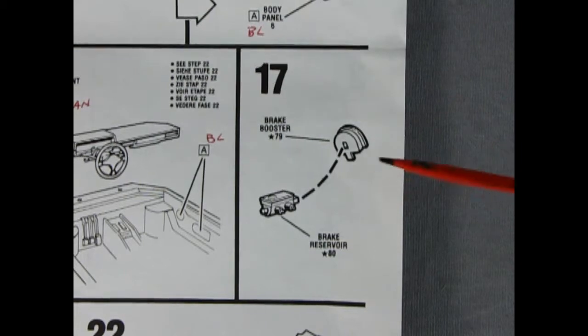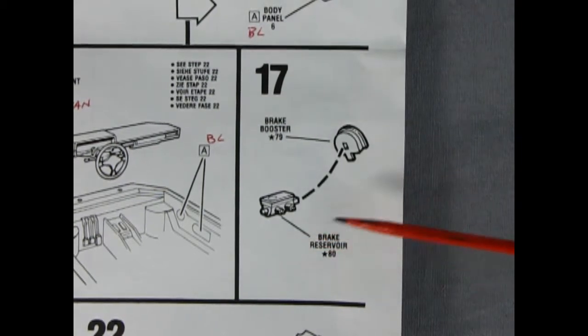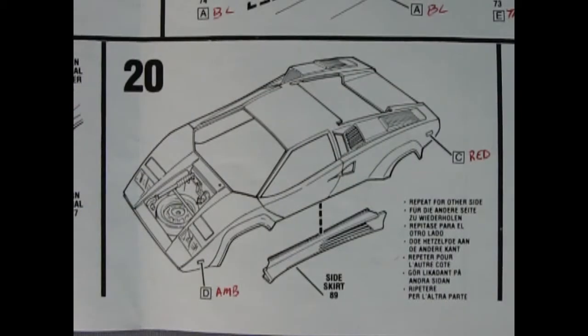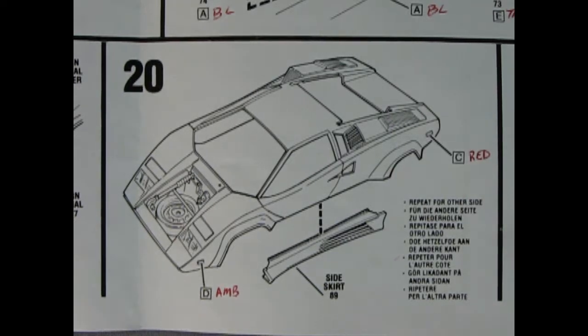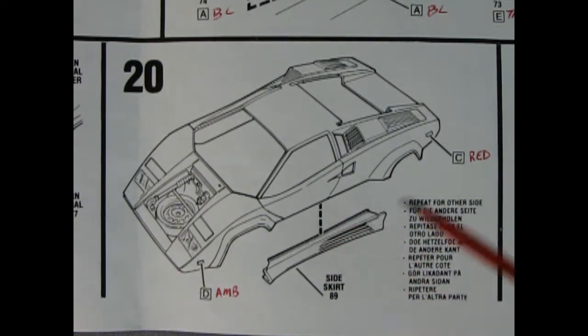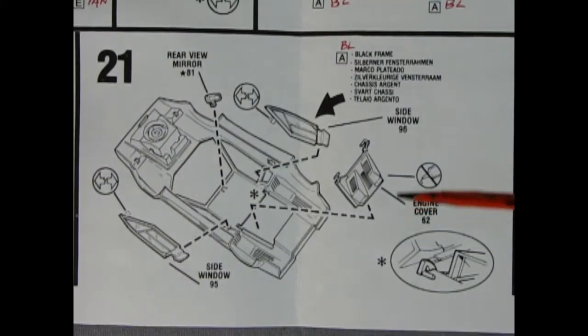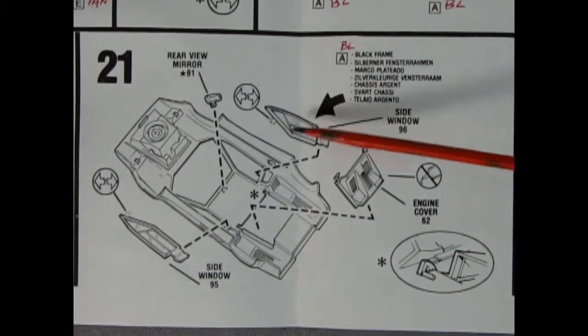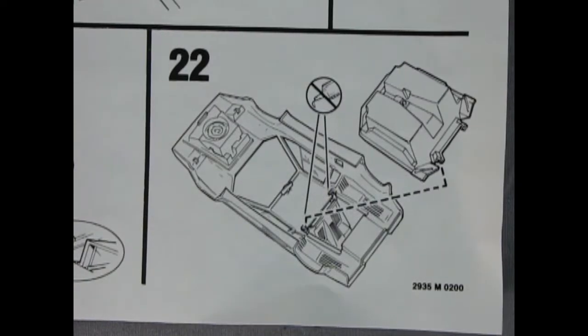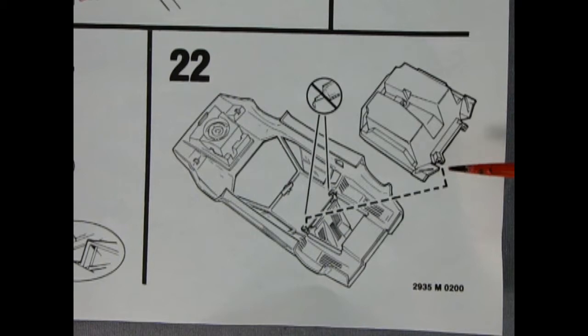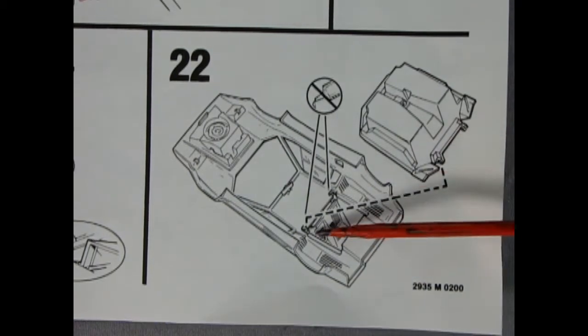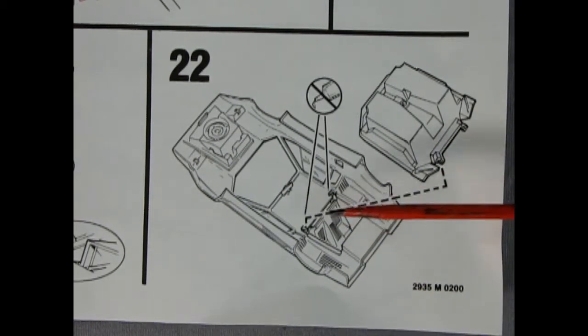Panel 17 shows the brake booster and the brake reservoir being glued together. Panel 20 shows our body with the side skirt being installed. Panel 21 shows where our engine cover goes and how it hooks in place and then we also put in our side glass and the rearview mirror. Panel 22 shows the body tub being glued into place and make sure that these line up with the hinges of that engine hatch.